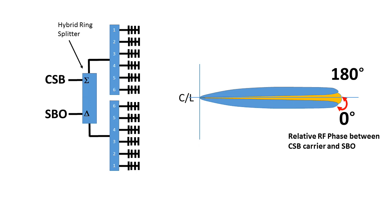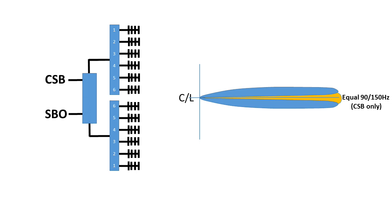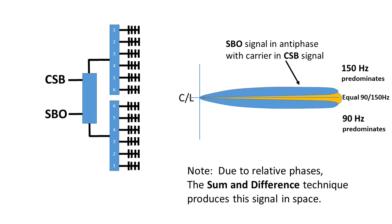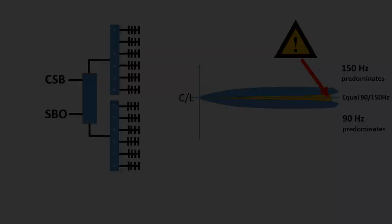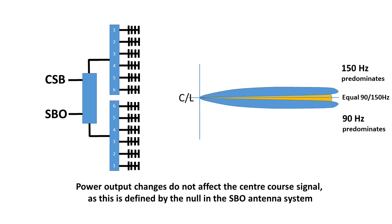On the centreline the deep null in the SBO pattern means that only the CSB signal is received with its equal 90 and 150 Hz tones — this defines the centre of the course towards the runway. The sum and difference technique works so that the CSB and SBO signals are summed in space to one side of the centreline and the difference is taken to the other side, hence the 90 Hz signal predominates on one side and the 150 Hz signal predominates on the other. Importantly, if the CSB signal reduces in amplitude it doesn't affect the centre line of the course signal — that is solely defined by the deep null in the SBO antenna. This antenna characteristic can be made very stable, making for a reliable and safe long-term approach guidance system.